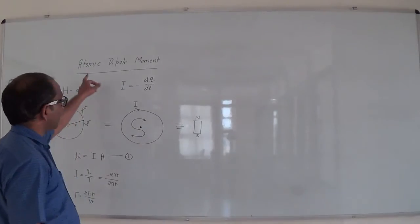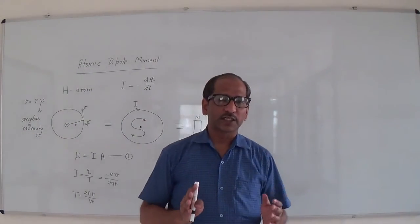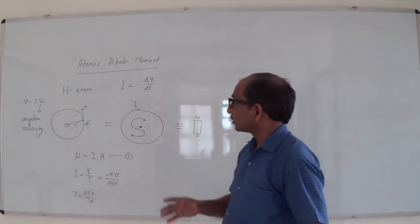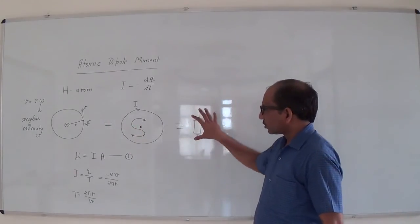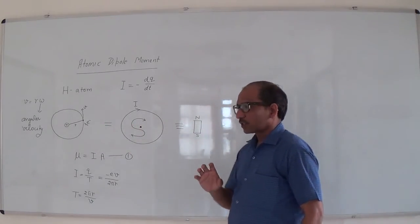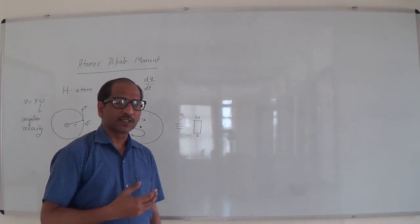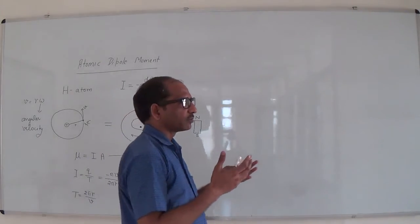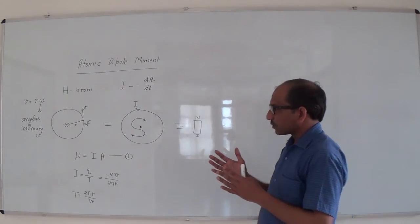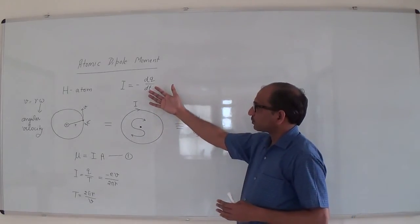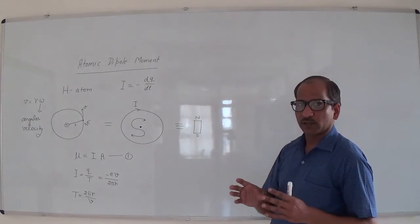Today's topic of discussion is atomic dipole moment. I have to cover some basic questions related to atomic dipole moment: how an atom is equivalent to a bar magnet, how to explain susceptibility and other points related to magnetic materials, and the number of applications of the atomic dipole moment which we can explain through various phenomena.